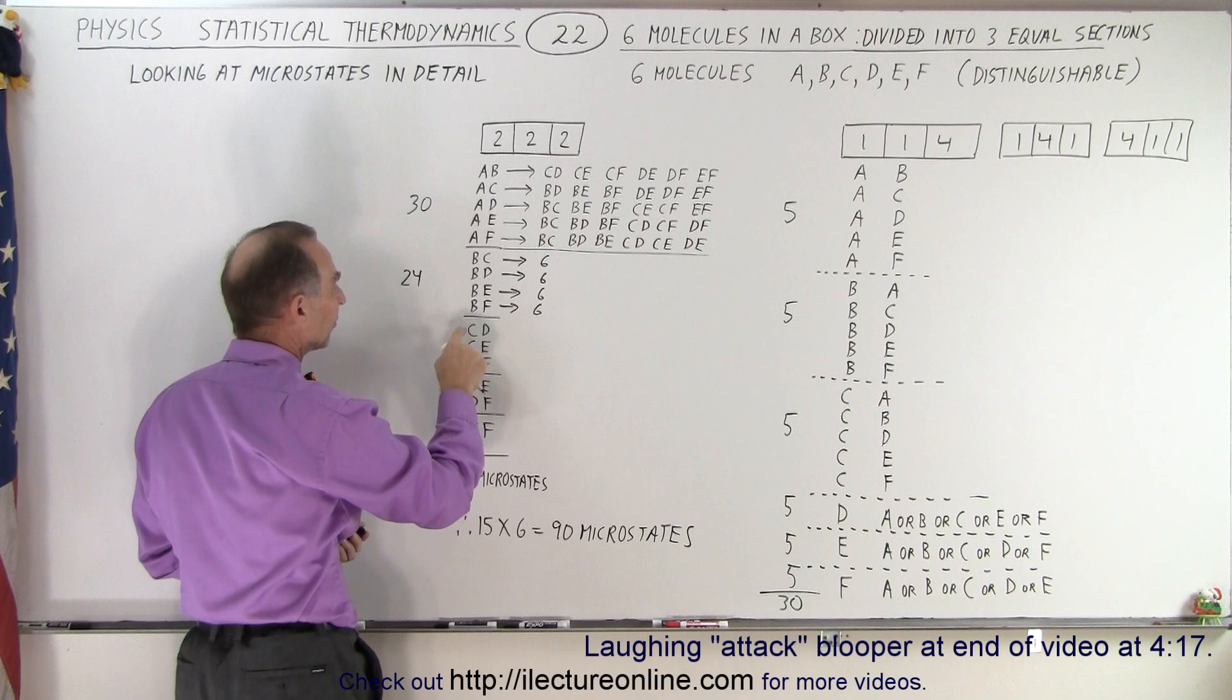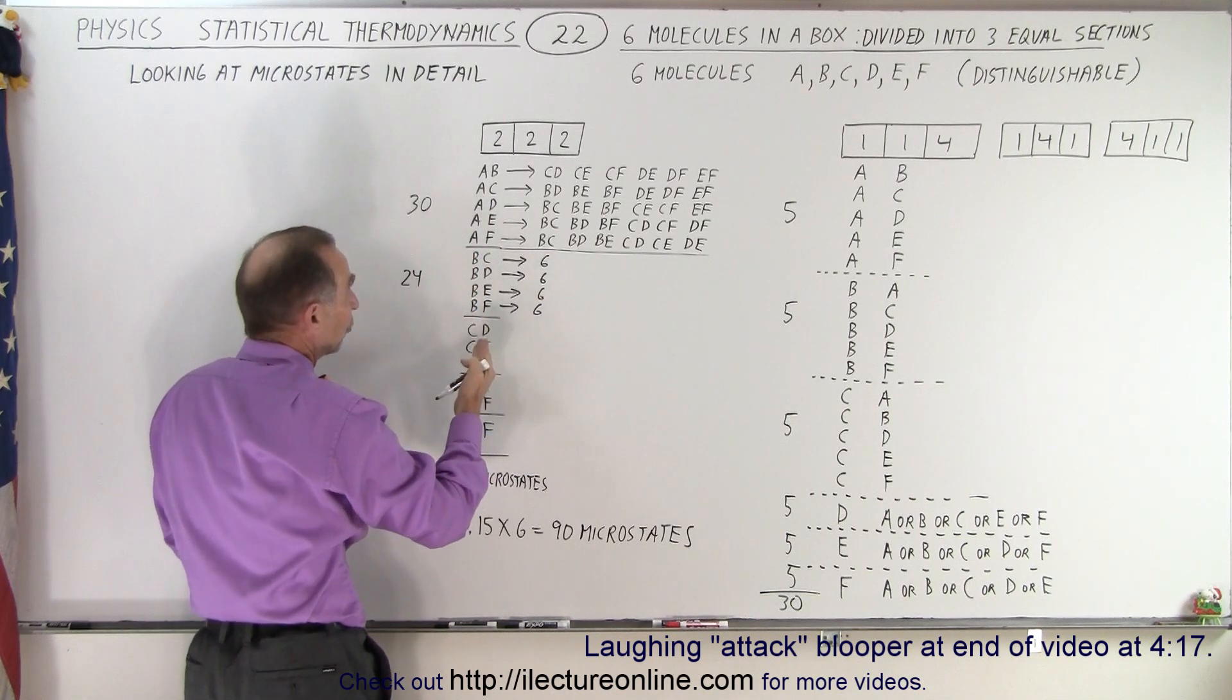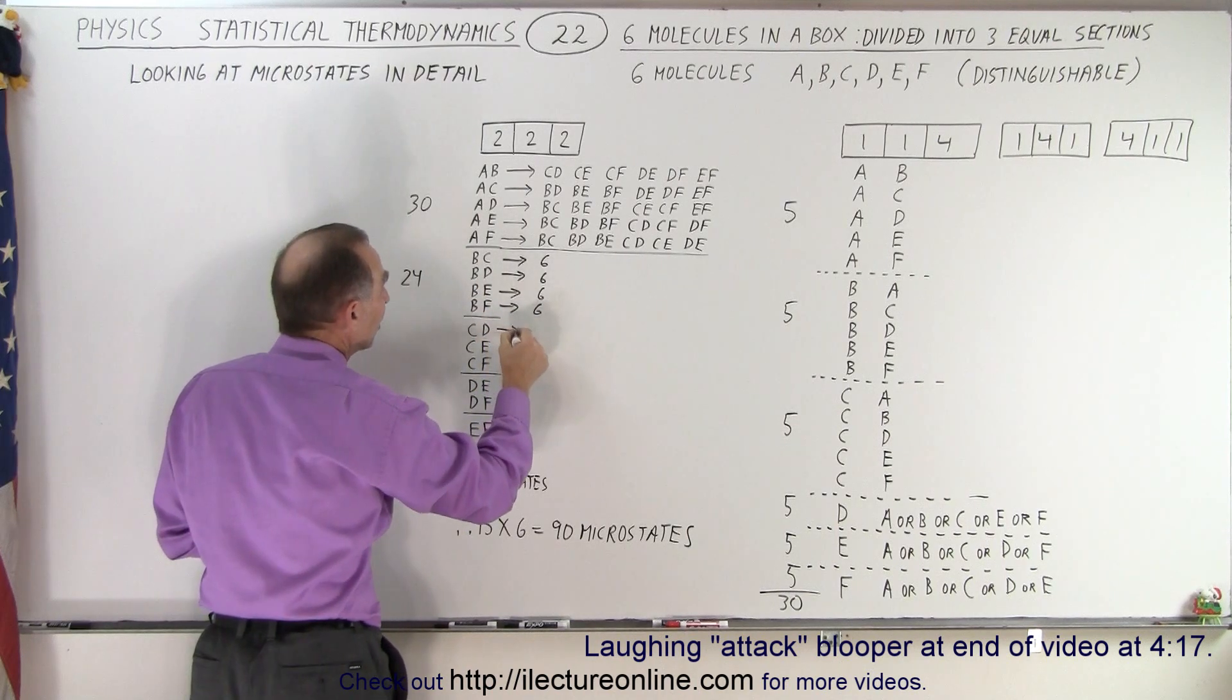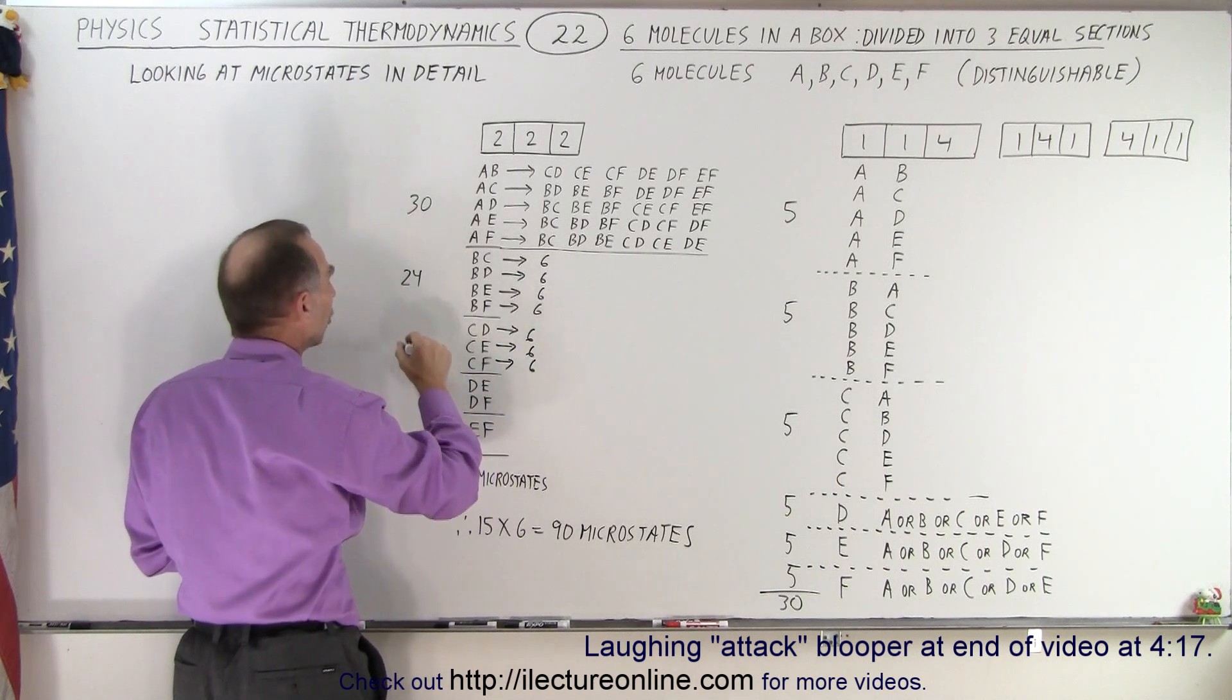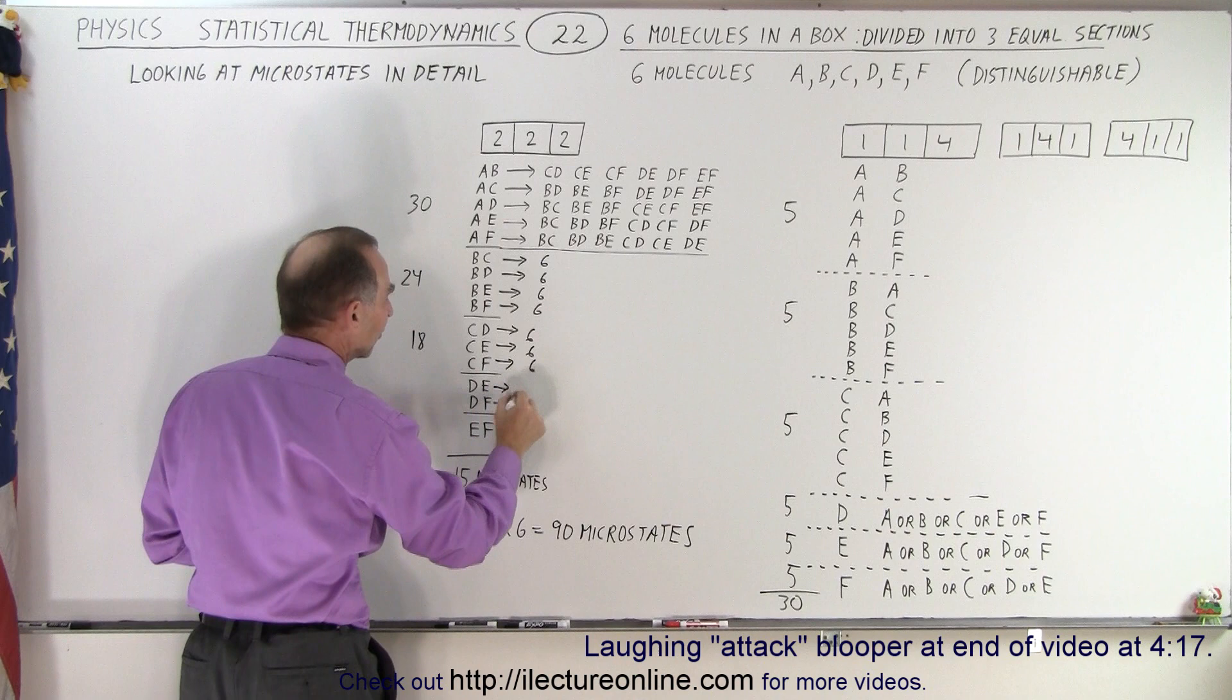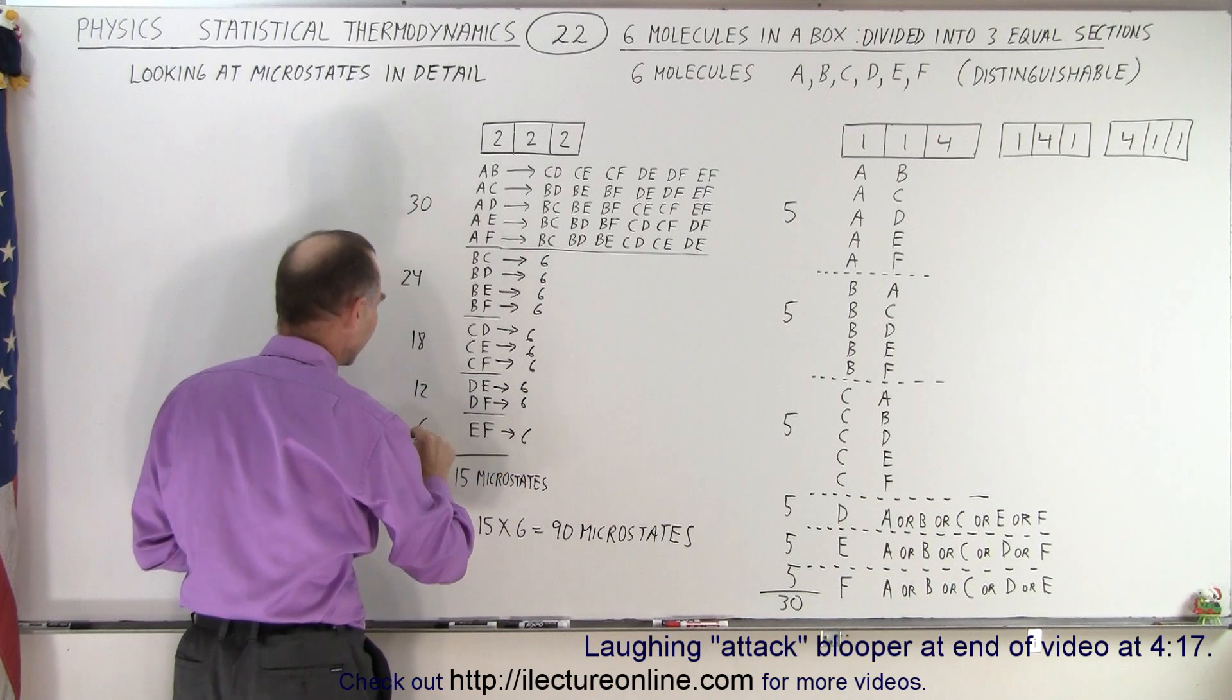And then if we take C and D, C, E, or C, F in the left box, again there's only three remaining combinations in the left box. With each of those we'll have a total of six, six, and six microstates or a total of eighteen microstates. In this case we'll have six and six, that would be twelve microstates, and here we have six, that would be six microstates.